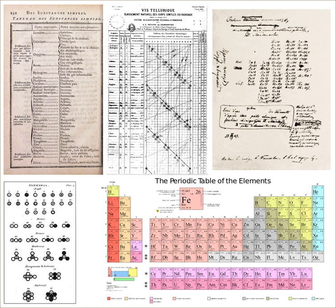The lanthanides were difficult to fit into the table. Polonium and radium, discovered by Marie Curie in 1898, also were difficult to fit into the table.